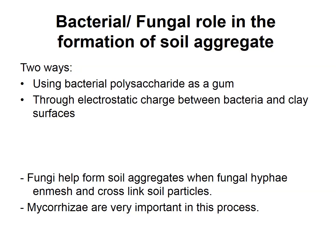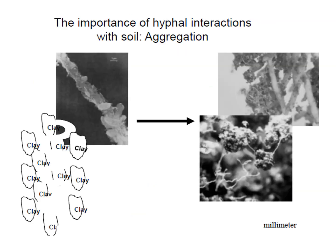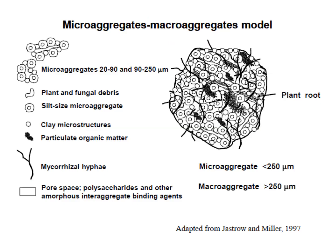The importance of bacteria and fungi in the formation of soil aggregates is achieved through two ways: using bacterial polysaccharides as gum, and the electrostatic charge between bacteria and clay surfaces, which attract to each other. The role of fungi is also evident through fungal hyphae that cross-link soil particles. Polysaccharides produced by mycorrhizae — a type of fungi that links plants and fungal networks in the soil — are also very important in this process. In this schematic, we can see aggregates linked through fungal hyphae.